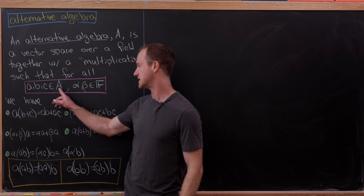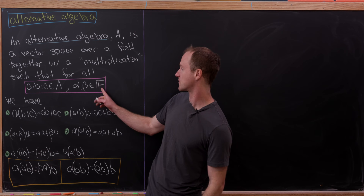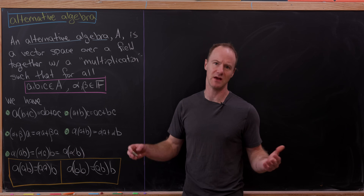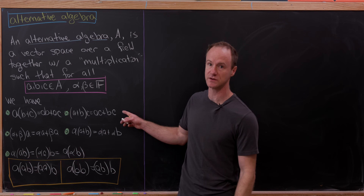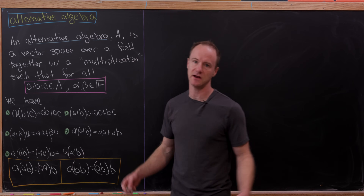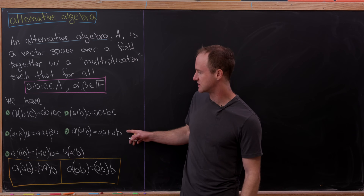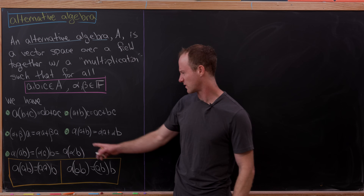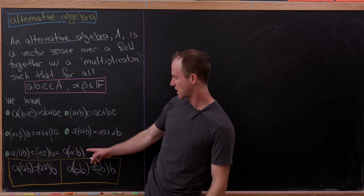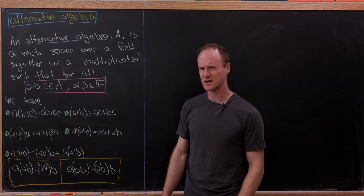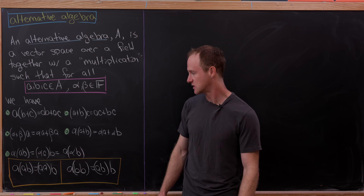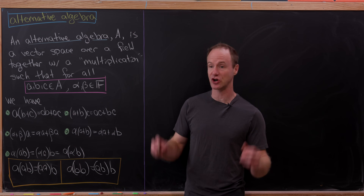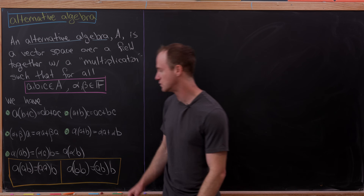So for vectors A, B, and C from the algebra A, and for scalars A and B from the ground field F, we have the following axioms. We've got nice distribution rules for vector addition and multiplication between vectors, nice distributive rules for addition of scalars and scalar multiplication over addition of vectors, and a rule for how scalar multiplication interacts with the multiplication of vectors. And then you've got the axiom that makes it an alternative algebra — these two rules.